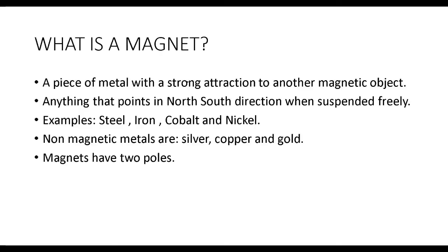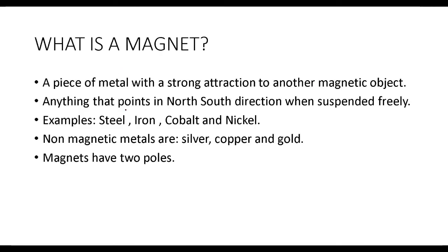So put simply, a magnet is a piece of metal with a strong attraction to another magnetic object, and it points in a north-south direction when it is suspended freely. Examples of magnetic substances are iron, cobalt, and nickel. Alloys of these substances — for example, steel is an alloy of iron — are also going to be magnetic substances.